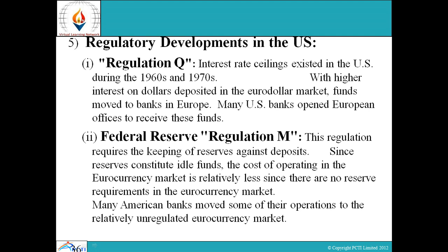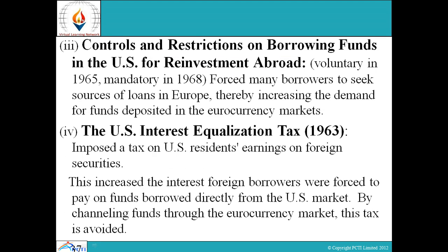Federal Reserve regulation requires the keeping of reserves against deposits. Since reserves constitute idle funds, the cost of operating in the euro currency market is relatively less as there are no reserve requirements. Many American banks moved some of their operations to the relatively unregulated euro currency market. Controls and restrictions on borrowing funds in the US for reinvestment abroad — voluntary in 1965, mandatory in 1968 — forced many borrowers to seek loans in Europe, increasing demand for funds in the euro currency markets. The US interest equalization tax of 1963 imposed a tax on US residents earning on foreign securities; by channeling funds through the euro currency market, this tax was avoided.